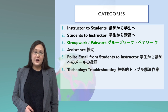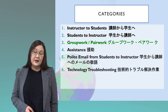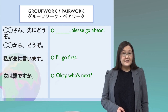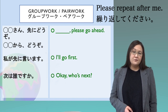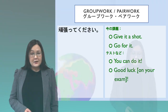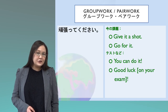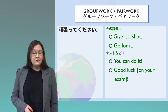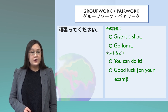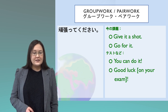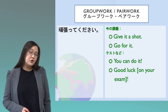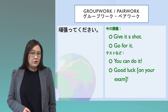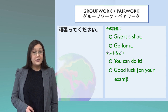The next category is group work and pair work assignments. When you're talking to your fellow classmates, you can say: 'Please go ahead,' or 'I'll go first.' Sometimes Japanese students want to encourage a classmate, but it depends on the situation which English phrase to use. If you're talking about a current assignment, say 'Give it a shot' or 'Go for it.' But if you're talking about a quiz or exam on a future day, say 'You can do it' or 'Good luck on your exam.'